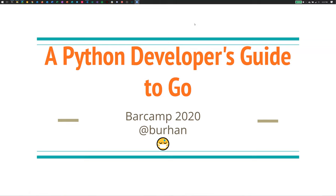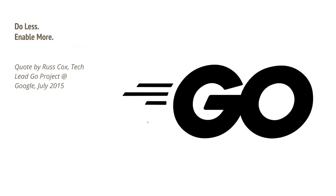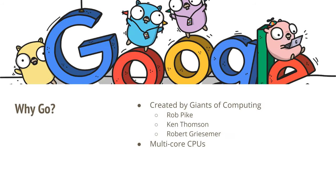The title is 'A Python Developer's Guide to Go,' but really it's just a developer's guide to Go. The logo of Go reflects its underlying theme: do less and enable more. So what is Go? Go is a programming language created by what I call the giants of computing: Rob Pike, Ken Thompson, and Rob Griesemer. Rob Pike and Ken Thompson worked at Bell Labs and are responsible for core C language work. Rob Griesemer is responsible for UTF-8.